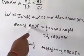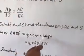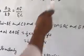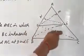Area of triangle ADE equals 1 upon 2 base times height, which is 1 upon 2 times AD times EN.